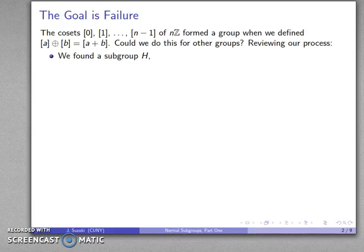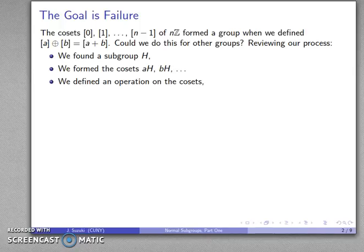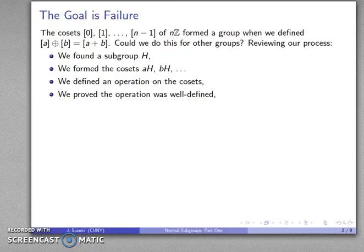If we look at our process, what we did is we started out by finding a subgroup H, we found the cosets, we defined a binary operation on the cosets, we proved that this binary operation was well-defined, and then we verified that our group properties actually held.